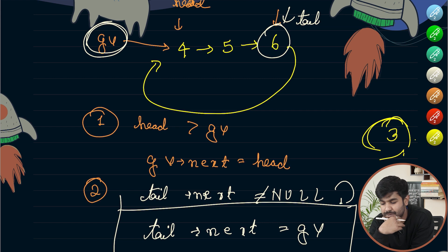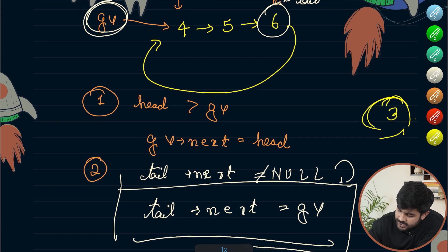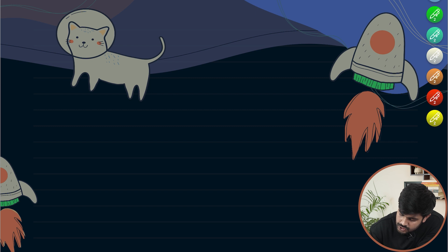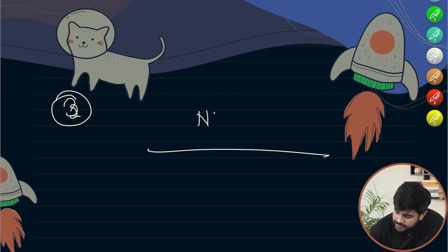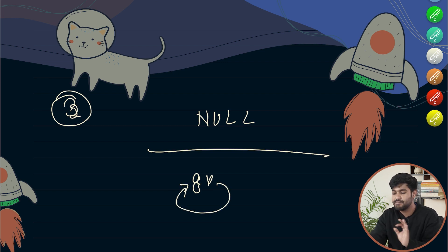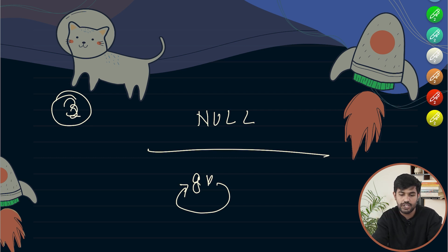There is one more scenario: what if the linked list does not exist — if we are given a null pointer? Then we introduce a new node with the given value, and its next should point to itself. Let's first implement this when head equals null, and then we'll handle all other cases.